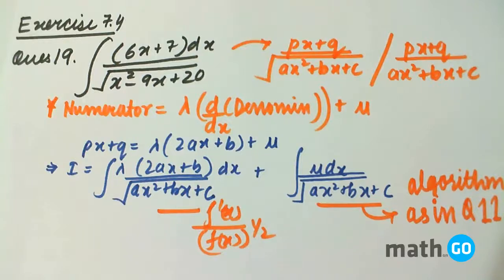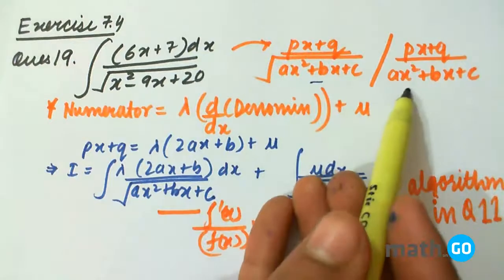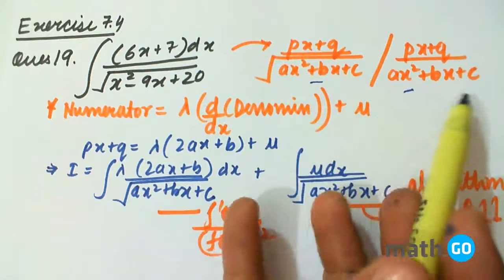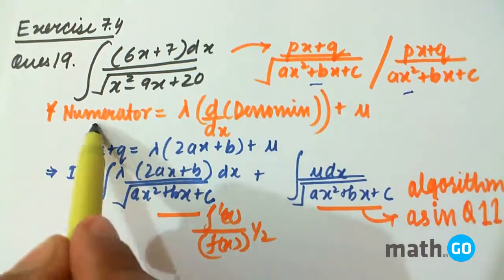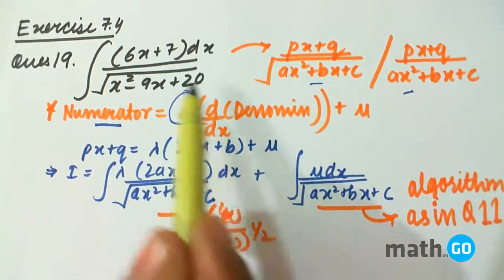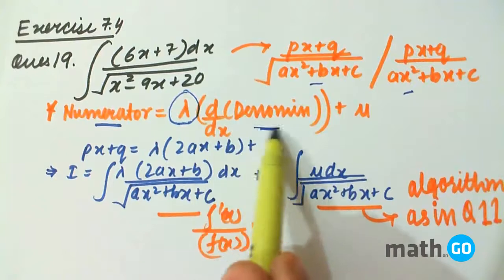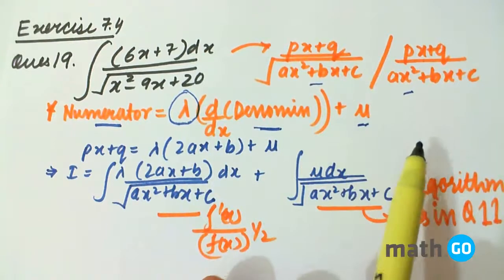Exercise 7.4 question number 19. If we have a question in this form, or this form with a root, or this form, simply then what do we do? We write numerator as some constant lambda into derivative of denominator plus another constant mu.